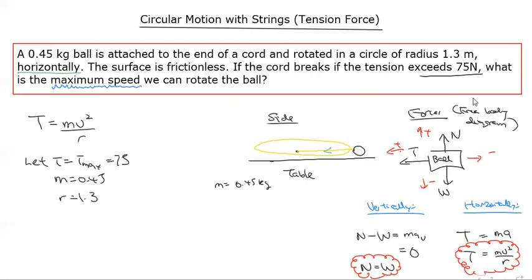We can work out what the maximum velocity is. The maximum tension must equal 0.45 times the maximum velocity all squared, all over 1.3. So your maximum velocity all squared is 75 times 1.3 divided by 0.45.